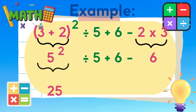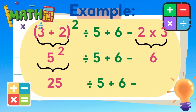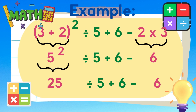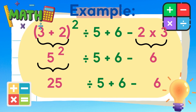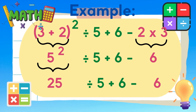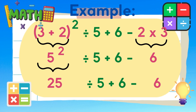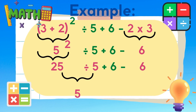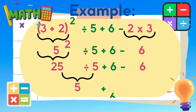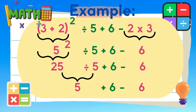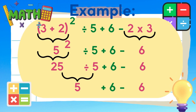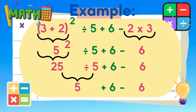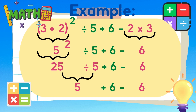Next, let's simplify 5 squared. It means 5 times 5, so the answer is 25. Afterwards, 25 divided by 5 is equal to 5. Now we are all done with the parenthesis, exponent, and the operations of multiplication and division.